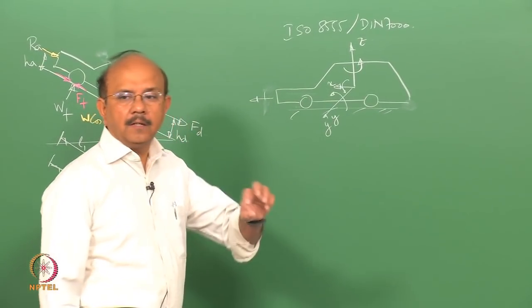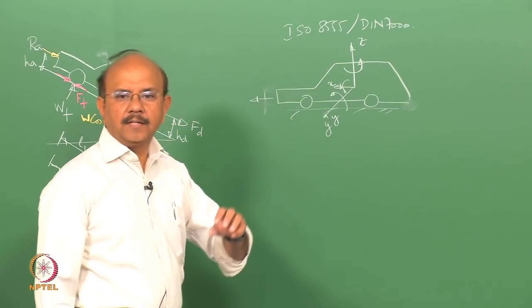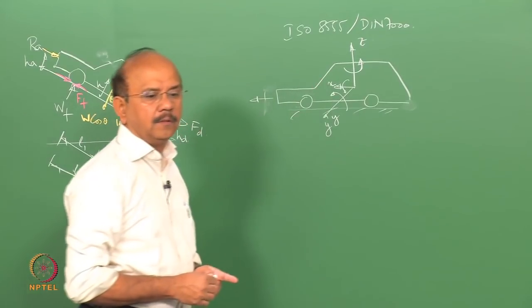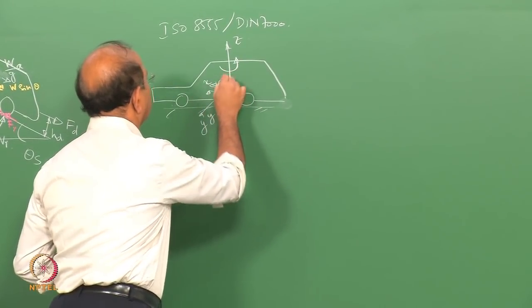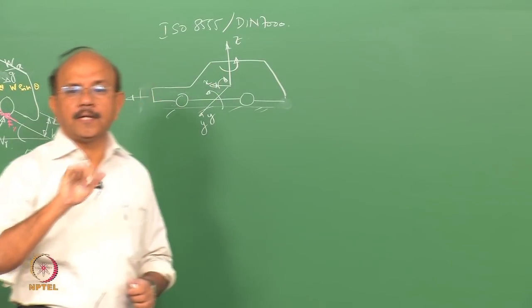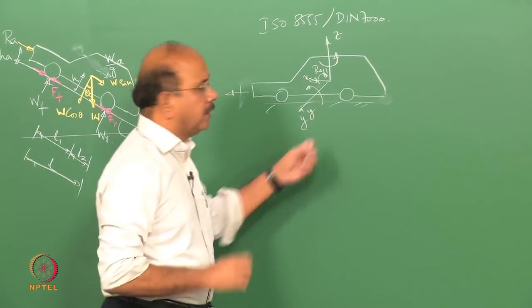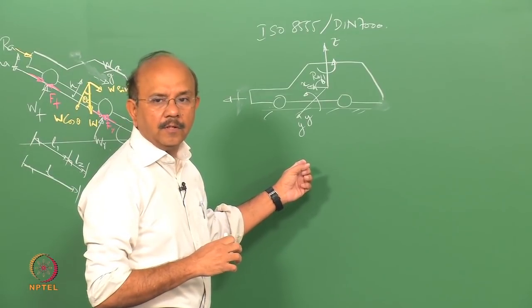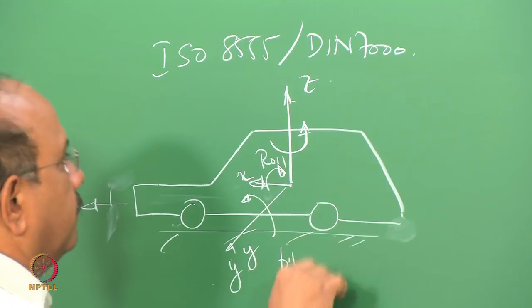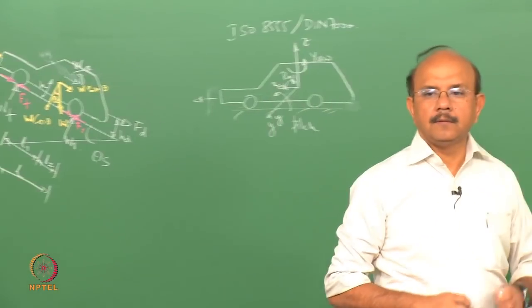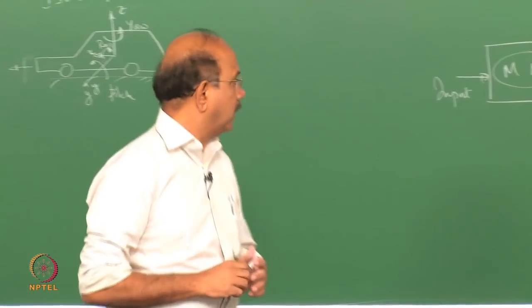There are also angular motions along these directions. The angular motion along the x-axis is called roll. The angular motion along the y-axis is called pitch — that is what we colloquially mean by pitching, moving in that direction. The angular motion along the z-axis is called yaw.